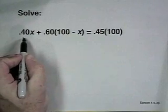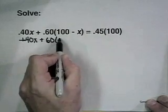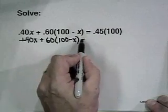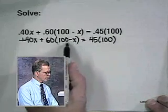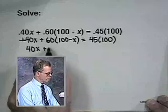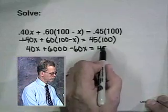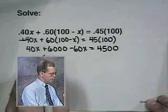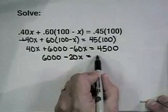Here's the solution to the problem. Our first step was to remove the decimals by multiplying through by 100. That would make this 40x plus 60 times (100 minus x) equals 45 times 100. Multiplying by 100 will not change the (100 minus x) inside. Now we'll use the distributive property to remove the parentheses. We can combine like terms to get 6,000 minus 20x equals 4,500.